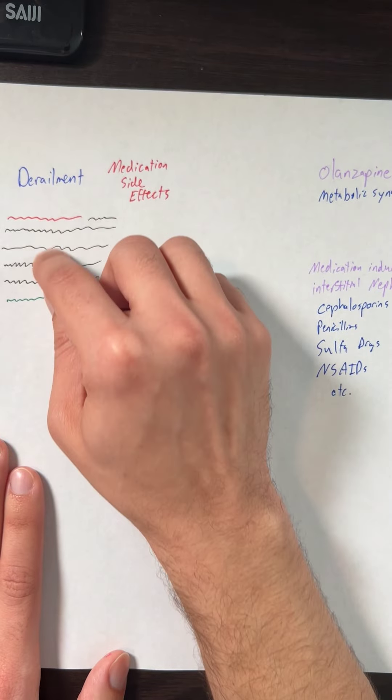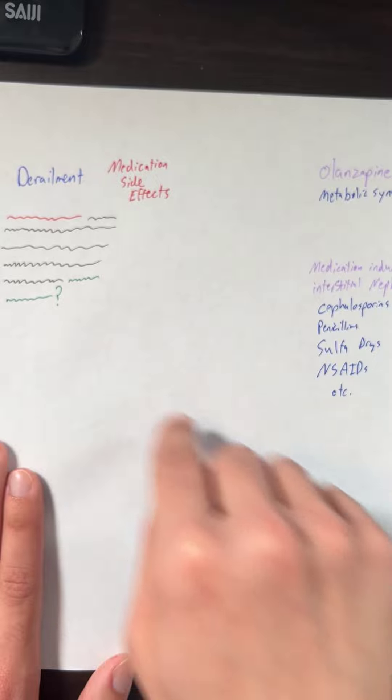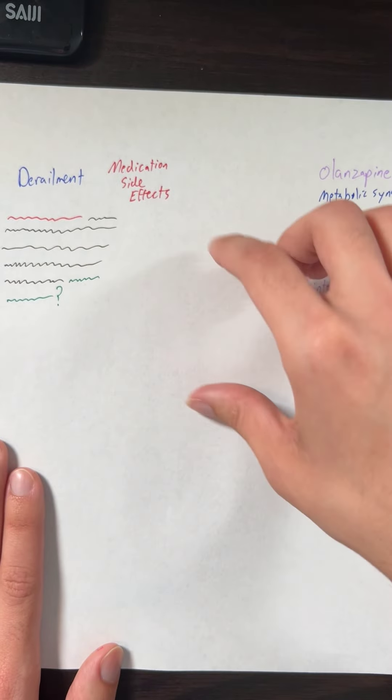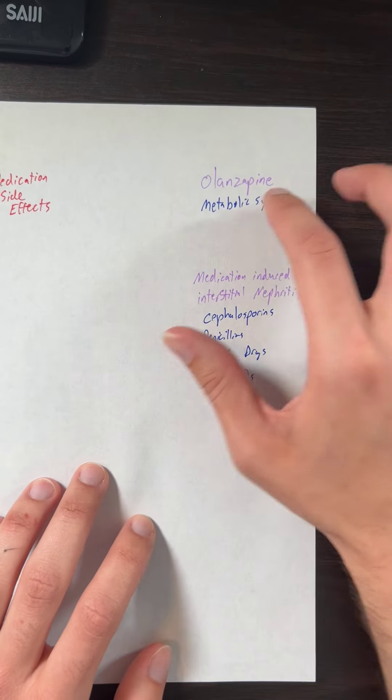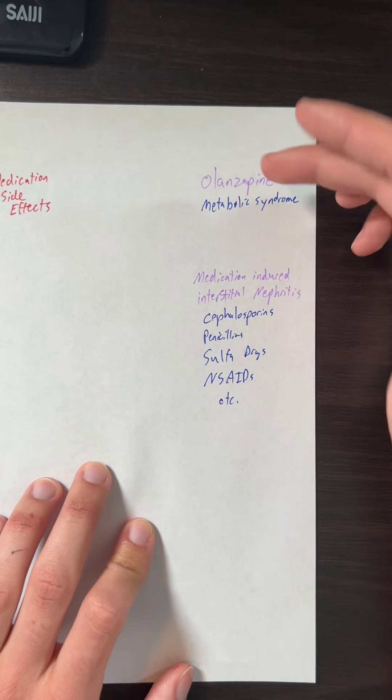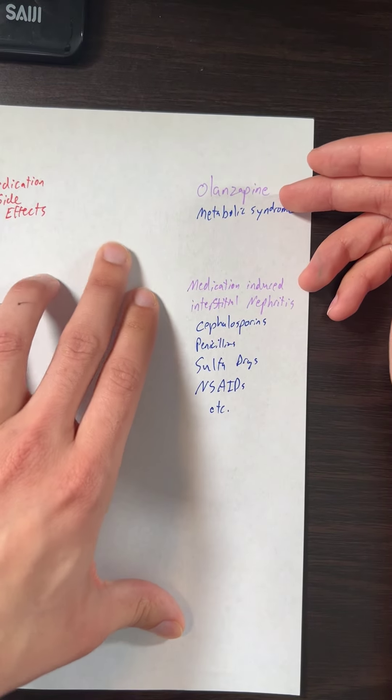Most of the time, they'll give you a lot of medications and ask what medication is causing this side effect, or a person started on XYZ medication and what's the most likely side effect that's going to happen. So famously, if you have olanzapine, one of the famous side effects is metabolic syndrome.